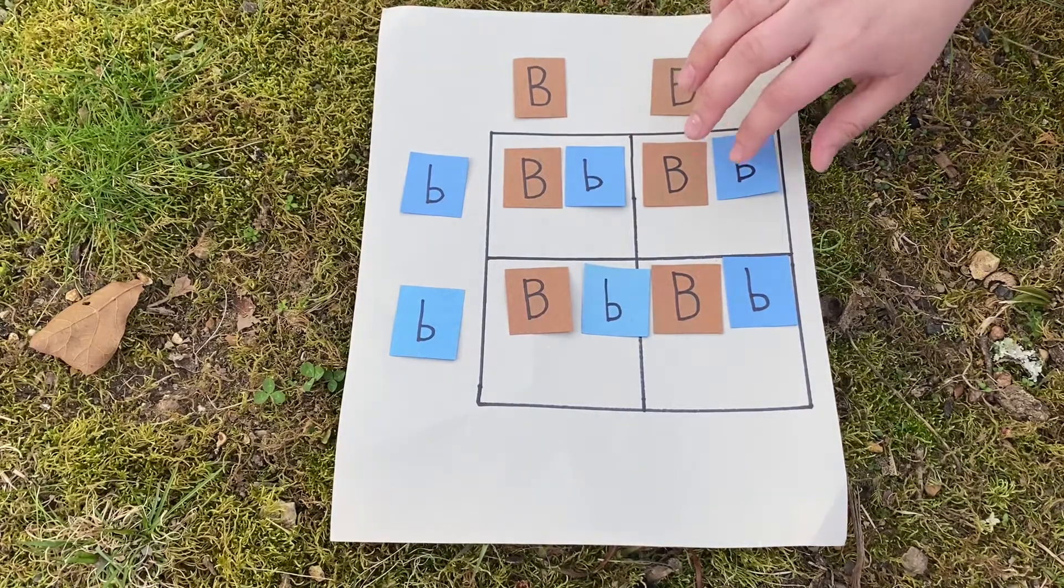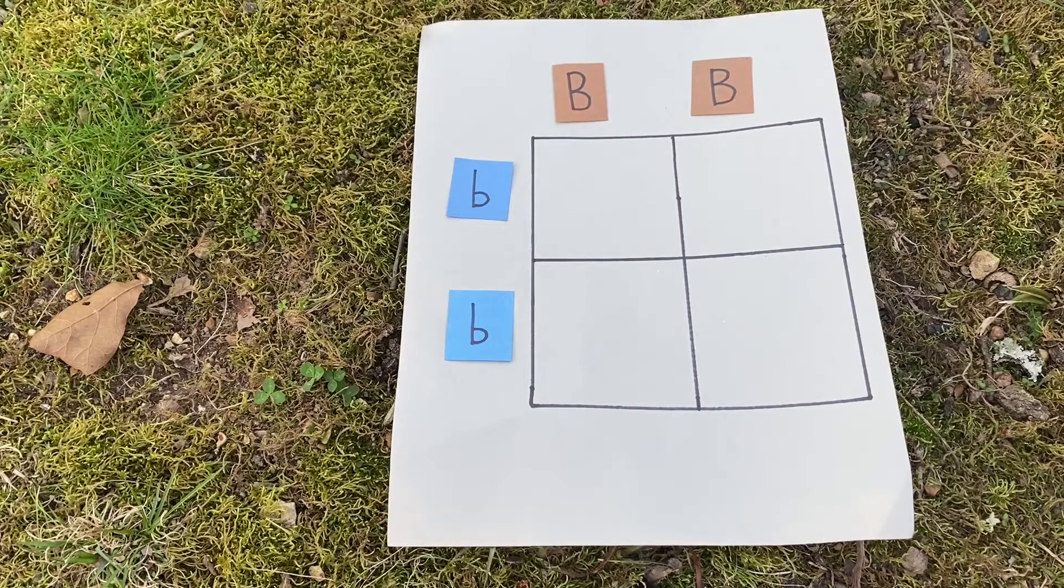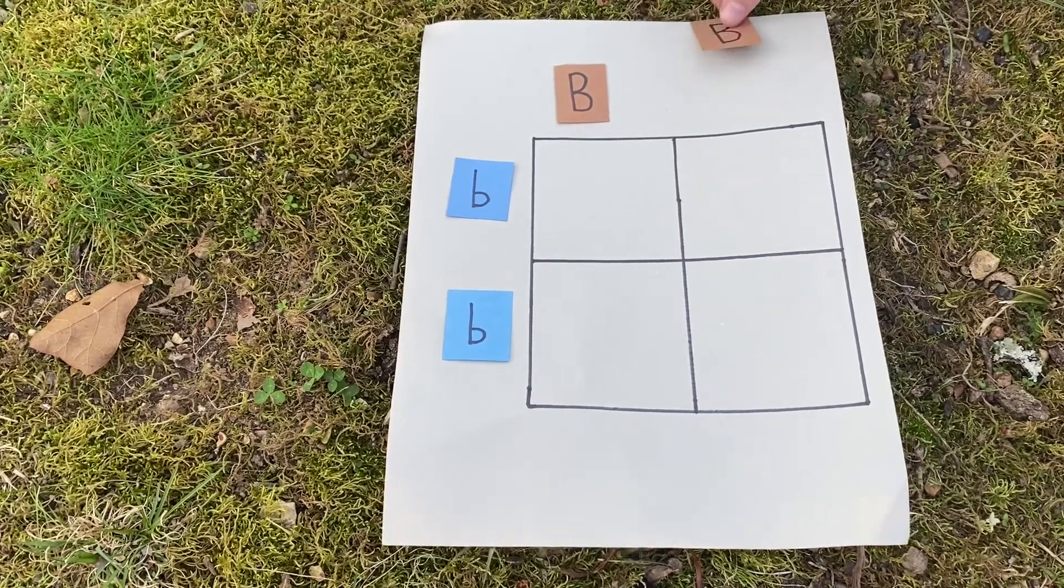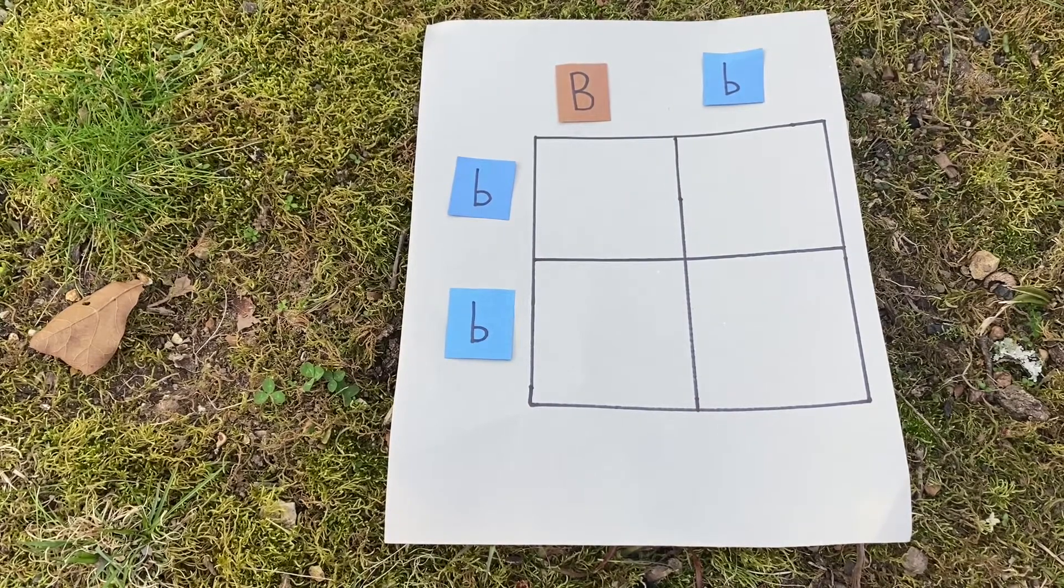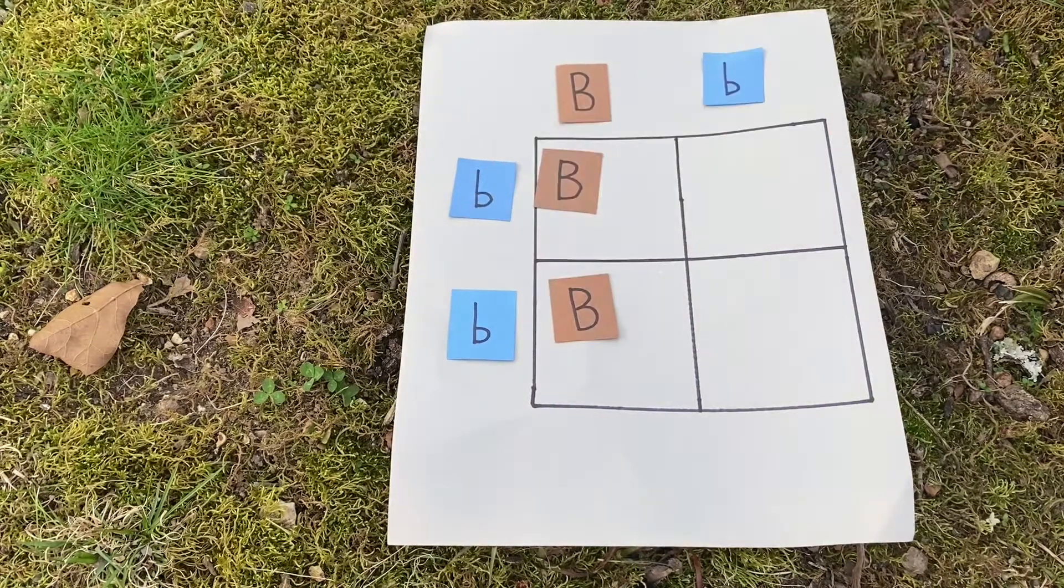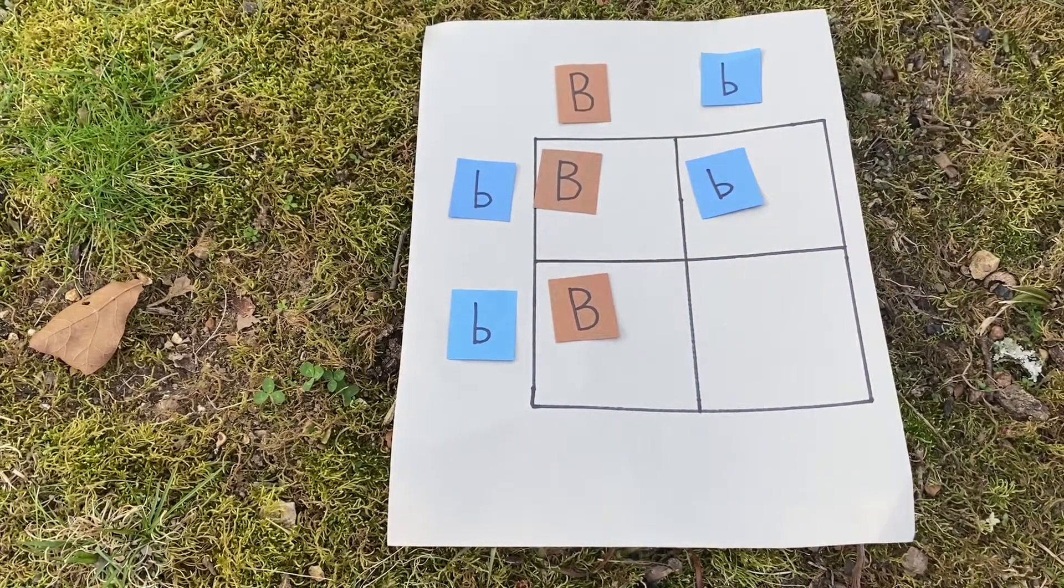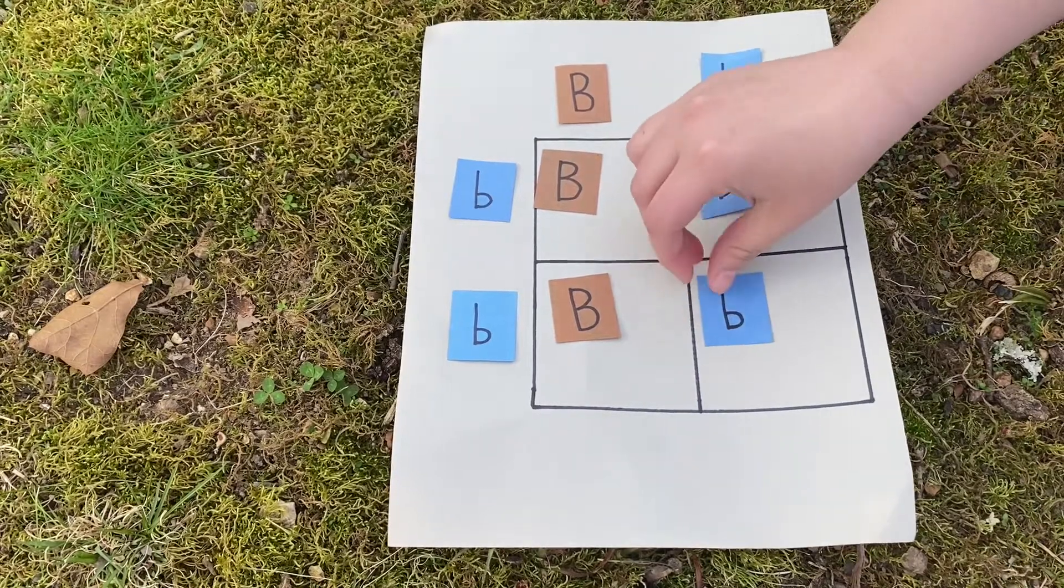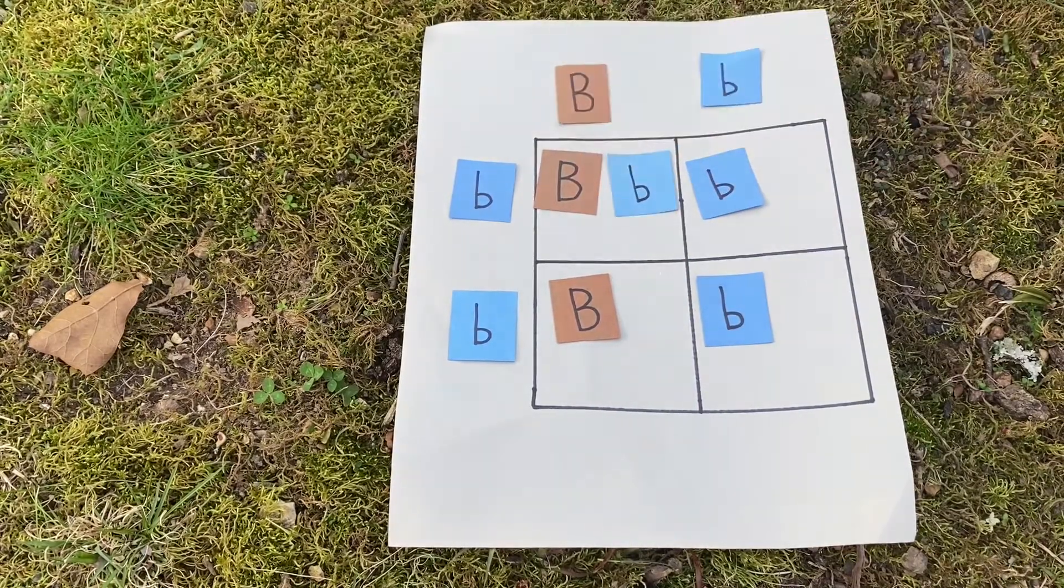Now let's look at a different case. Now say you have a parent with brown eyes but instead of having a second big B they have a little b. Well we're going to do the same thing here. We're going to put a big B there and a big B there. But we're going to take this little b and start putting it down. A little b there and a little b there. Then we do the same thing we did over here and add the little b's.